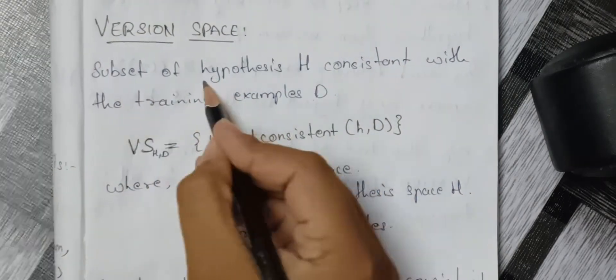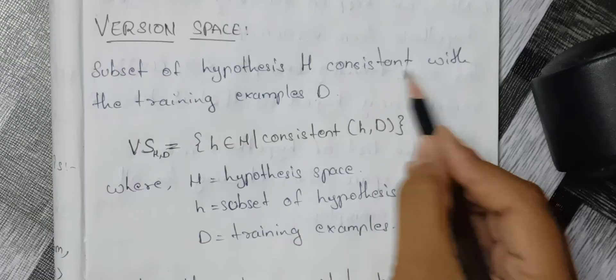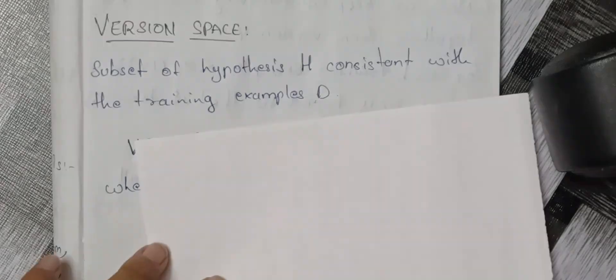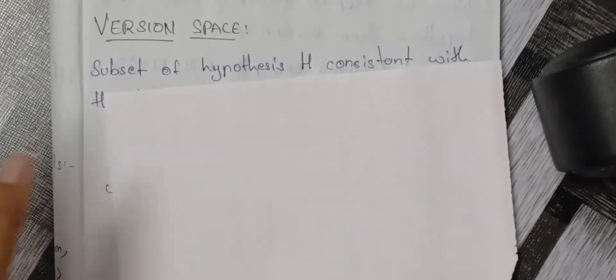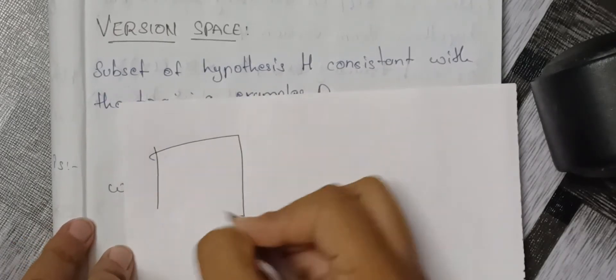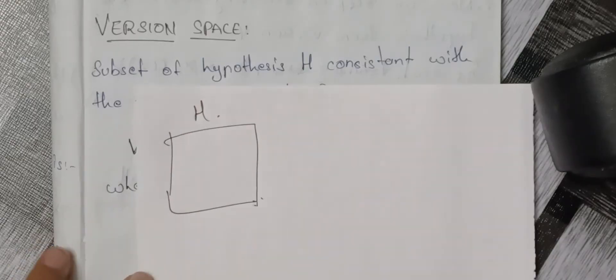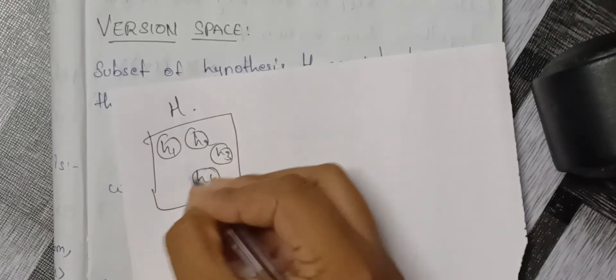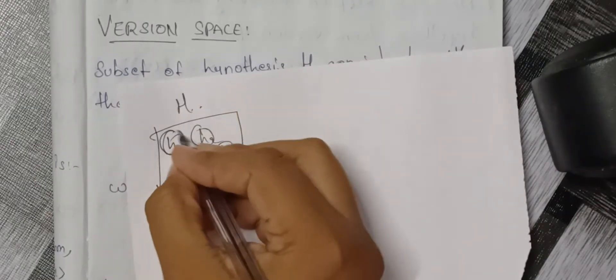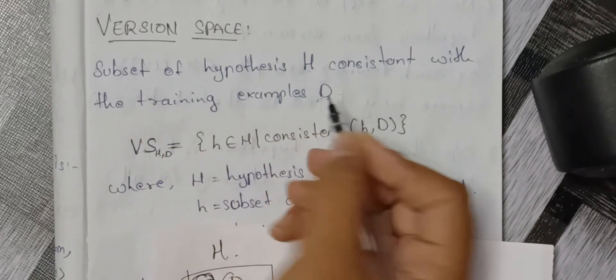Let's start the version space. A subset of hypothesis space H must be consistent with the training examples D. If we have hypothesis H with many different subspaces, we talk about the correct hypothesis. Here is a hypothesis space H, and within it there are subsets H1, H2, H3, H4, H5 and so on. This subset of H must be consistent with training examples D.